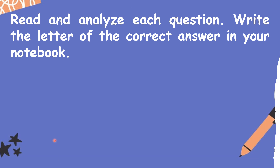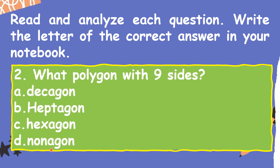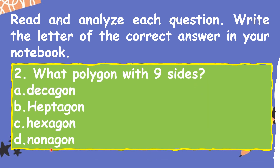For number two: what polygon has nine sides? A. Decagon, B. Heptagon, C. Hexagon, D. Nonagon. What is your answer? It's nonagon.